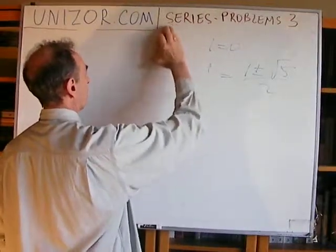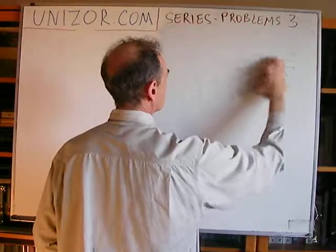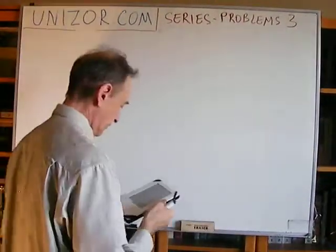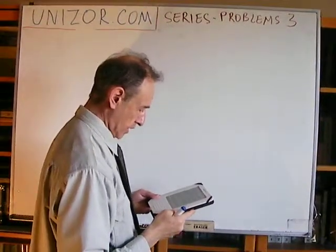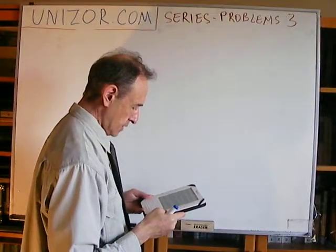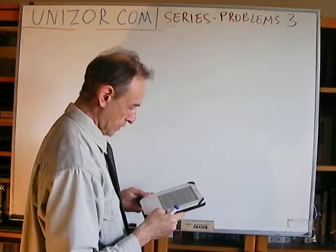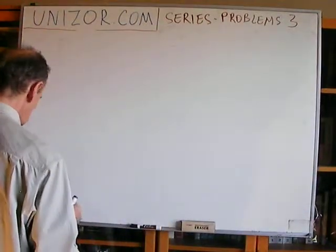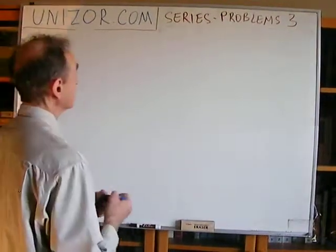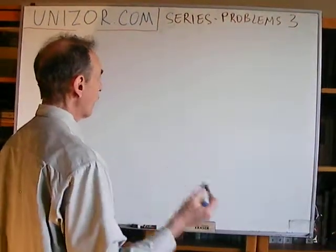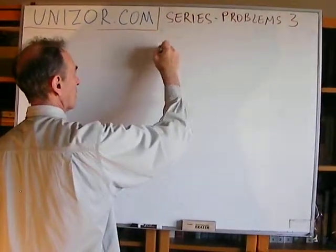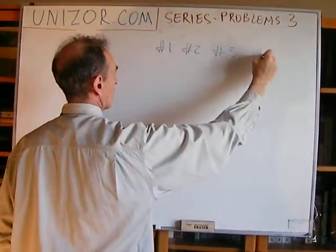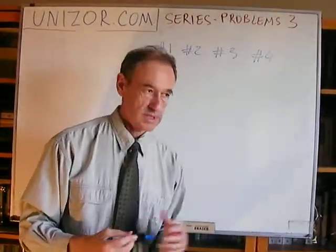Next problem: a sequence consists of four elements. Find these elements given that elements one, two, and three form a geometric progression; elements two, three, and four form an arithmetic progression; the sum of the first and fourth elements is 14; and the sum of the second and third is 12.